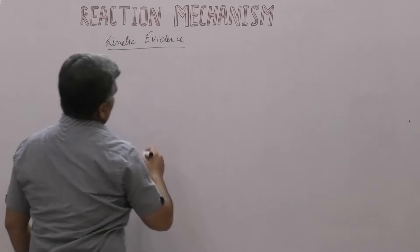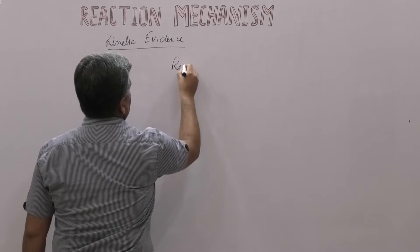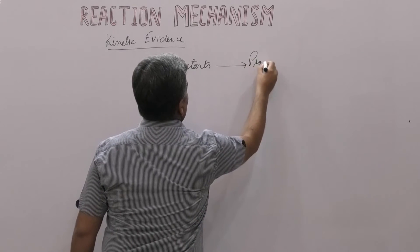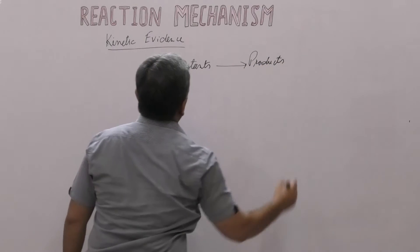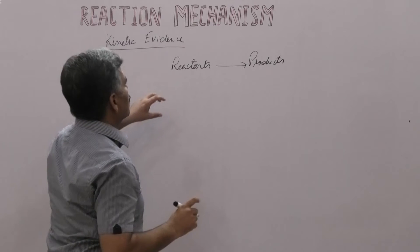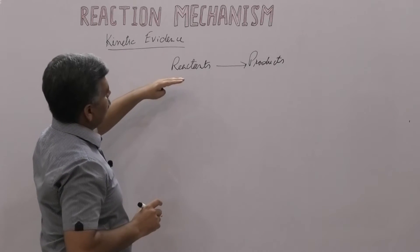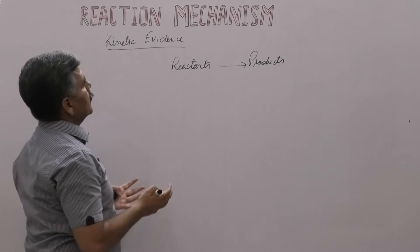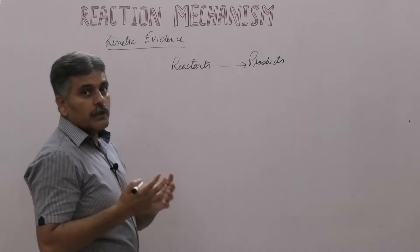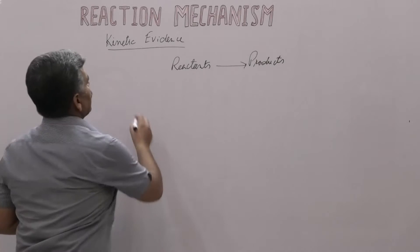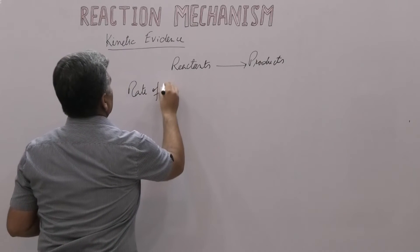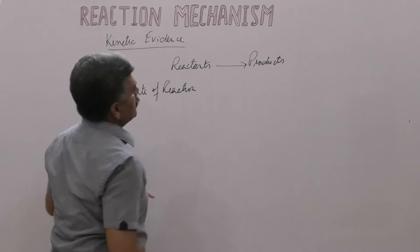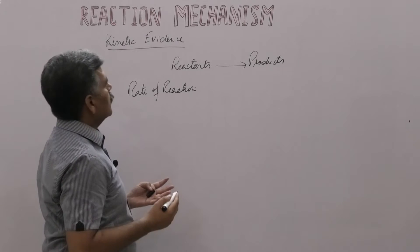Suppose we have reactants that are converted into products. What is rate of reaction? Rate of reaction is the disappearance of the reactants or the appearance of the products — the change of concentration per unit time. This is known as the rate of reaction.